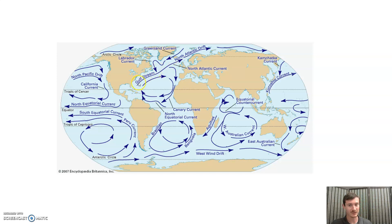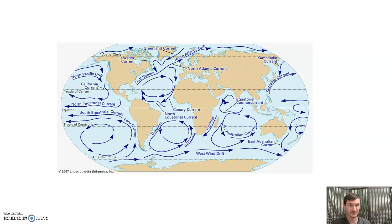If the Gulf Stream stops taking warm water up to England, think about it: England is at the same latitude as the middle of Canada. The reason why the weather in England is not like the middle of Canada is because the Gulf Stream brings warm water up. If that stops happening — and it could — that's going to be a problem.